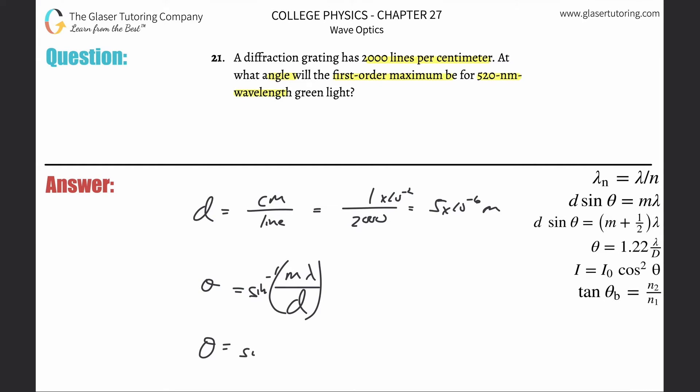All we need to do is basically just plug it all in. First order max, so it's 1. The wavelength was 520 nanometers, so multiply it by 10 to the minus 9th to get that into meters. Then divide that by 5 times 10 to the minus 6th. Inverse sine, 520 times 10 to the minus 9th divided by 5 times 10 to the minus 6th.